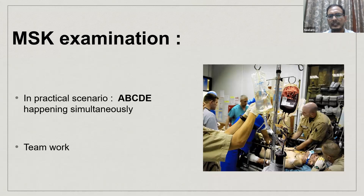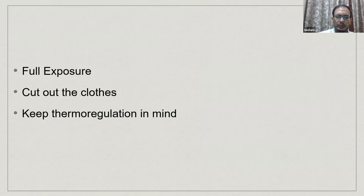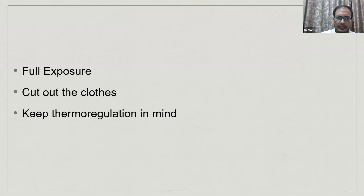In a real trauma situation, all ABCDE steps happen simultaneously as a team — one person managing one aspect while the team leader coordinates. For musculoskeletal examination: do a full exposure of the child — cut the clothes if needed. Remove wet clothes or any chemical or poisonous material around the body. Keep an eye on all extremities, trunk, head and neck. Keep in mind heat loss — maintain appropriate emergency room temperature, and cover the child with a warm blanket after exposure and survey.